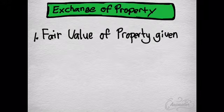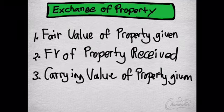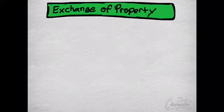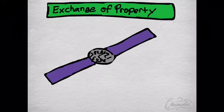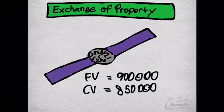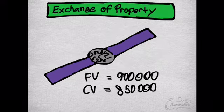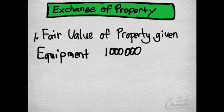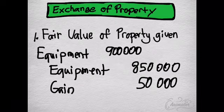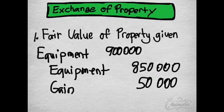Sometimes a company may also exchange their own non-cash asset for the property. For a quick example, let's say you have a watch that you want to exchange for the zip-up backpacking shoes. The fair value of the watch is 900,000 and its carrying amount is 850,000. Using the first priority — fair value of the property given — we would debit equipment for 900,000, credit equipment for 850,000 (the carrying amount), and the excess of 50,000 would be credited to gain.